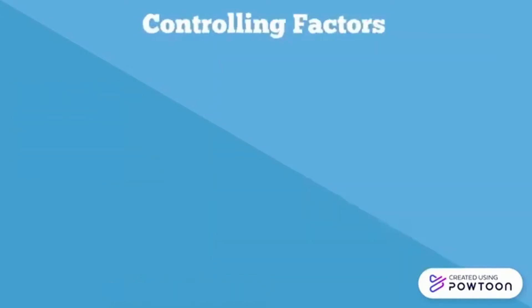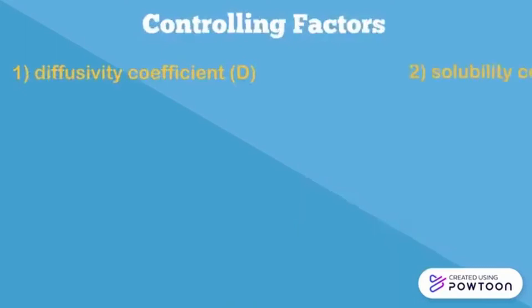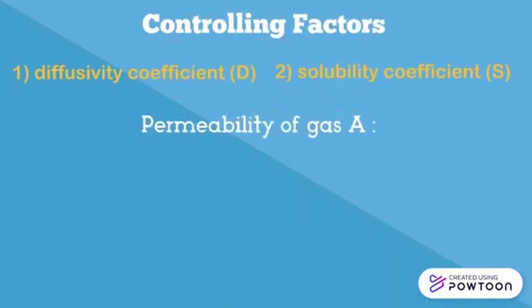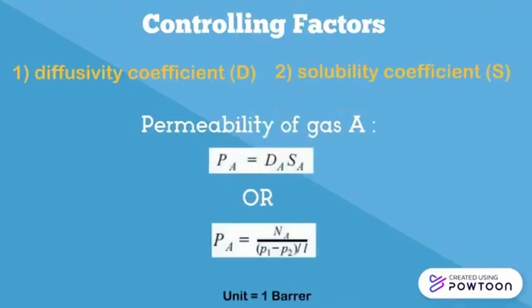There are two controlling factors for this mechanism, which are diffusivity coefficient D and solubility coefficient S. The permeability of gas A can be expressed as P_A equals D_A times S_A, or P_A equals normalized flux divided by pressure difference over thickness of membrane. The unit is one Barrer.